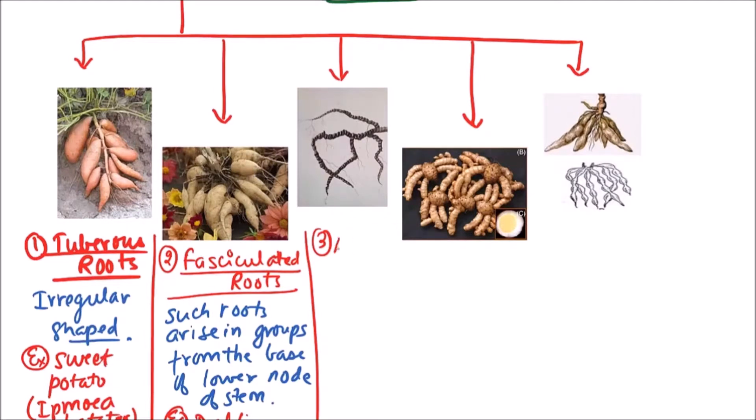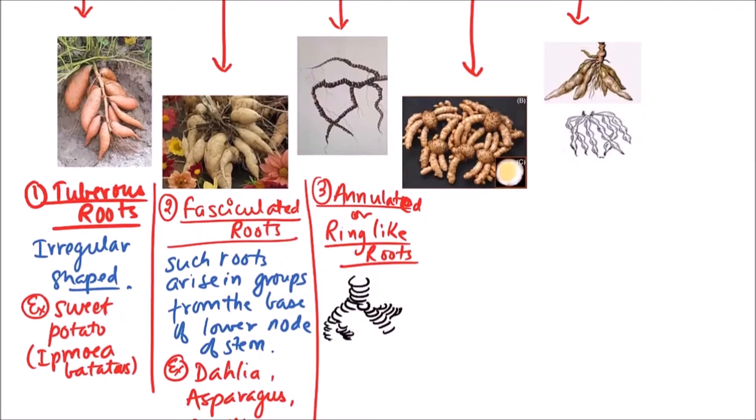The third one is annulated or ring-like roots. The appearance is like this: rings will continue along the branch, so deposition is just like rings, annular. And the examples include Cephaelis.